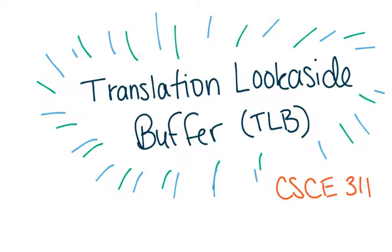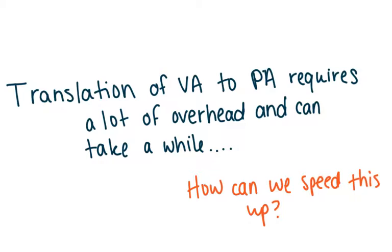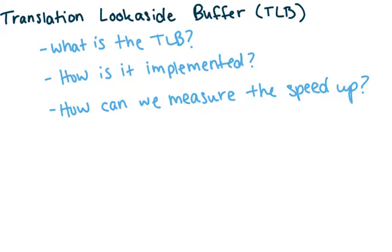Hi everyone. In this lecture, I'm going to talk about the translation look-aside buffer, or the TLB. We saw through single-level and multi-level paging that there's a lot of overhead required with translating a virtual address into a physical address. This overhead can take a while — it takes cycles to run these lookups. The goals of today are to talk about what the TLB is, how it's implemented, and how we can measure the speedup we get from it.